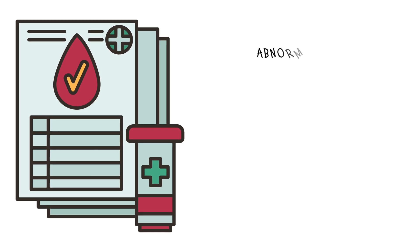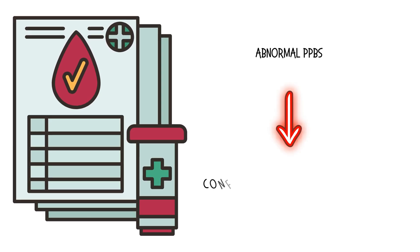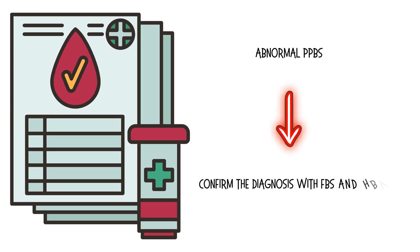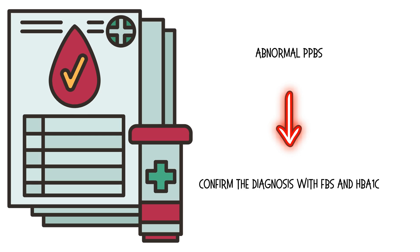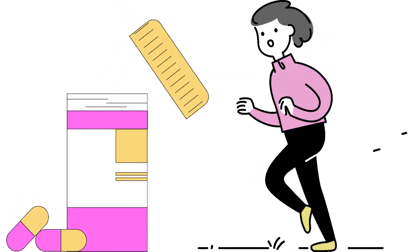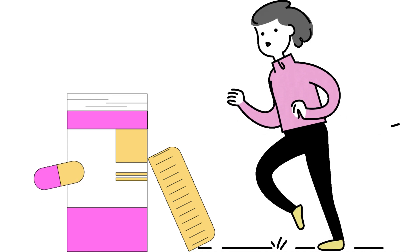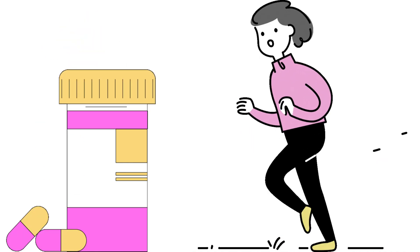In cases of abnormal PPBS results, the diagnosis should be confirmed with a fasting blood glucose and HbA1c test. Based on the results of these tests, lifestyle modifications and anti-diabetic medications may be indicated.